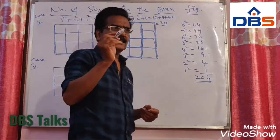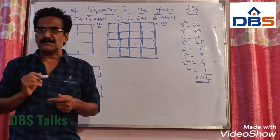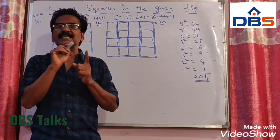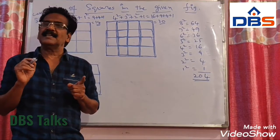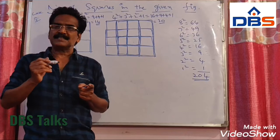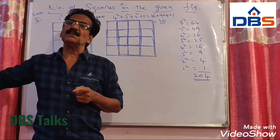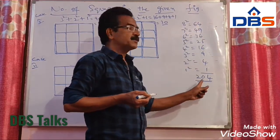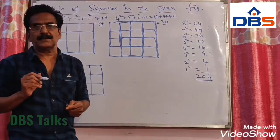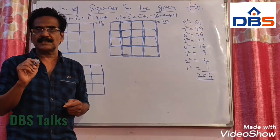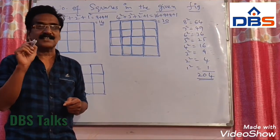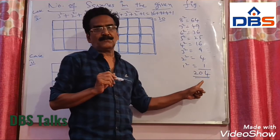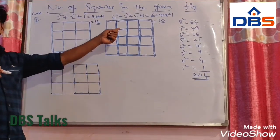Now let me ask you a small question. How many squares are there on a chess board? On a chess board there will be 8 rows and 8 columns. Then the number of squares will be 8 squared plus 7 squared plus 6 squared plus 5 squared, up to 1 squared. On adding from 8 squared to 1 squared, the total comes to 204. This is an important question — the number of squares on a chess board is 204.